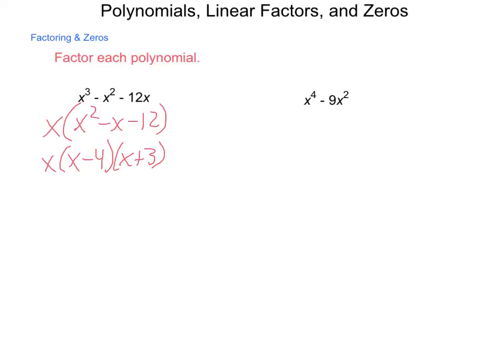In our next expression, what is it that we can factor out? What is the greatest common factor of x to the 4th and negative 9x squared? Hopefully you said x squared. Because if I divide both of these terms by x squared, it will leave me with another x squared and a minus 9.